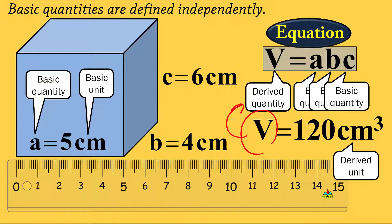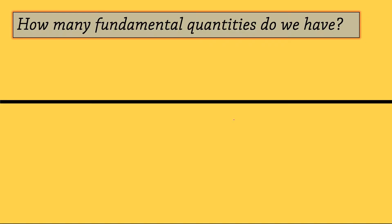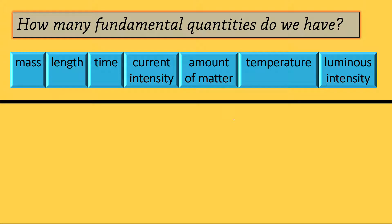You may ask: how many fundamental quantities do we have? Based on the agreement of scientists, we have seven fundamental quantities: mass, length, time, current intensity, amount of matter, temperature, and luminous intensity.